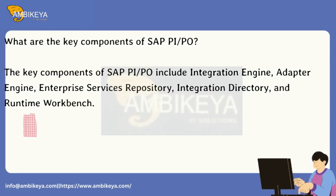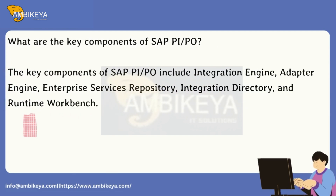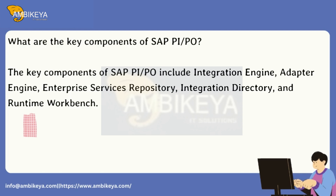What are the key components of SAP PI/PO? The key components of SAP PI/PO include Integration Engine, Adapter Engine, Enterprise Services Repository, Integration Directory, and Runtime Workbench.